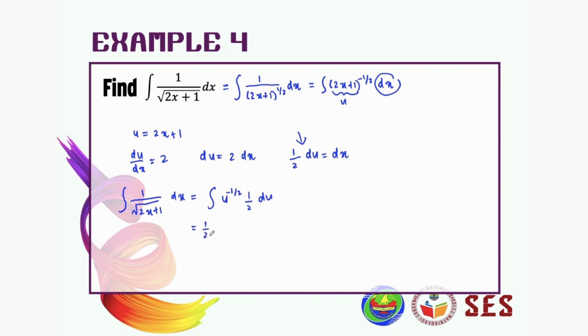So 1 over 2, u to the negative 1/2. Just integrate: become u to the negative 1/2 plus 1 is 1/2, divided by 1/2, which is 1 divided by 1/2 plus constant.